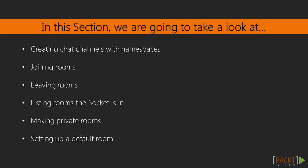After that, we'll see how to join rooms and then leave them. We'll also list the rooms the Socket is in. Then we'll make private rooms and finally set up a default room.